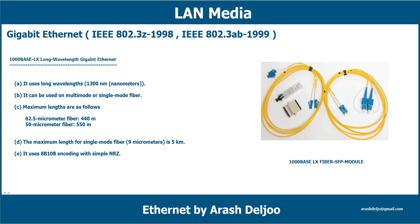The next standard is 1000Base-LX, which stands for long wavelength gigabit ethernet. The LX stands for long, indicating that this version is intended for use with long wavelength transmissions over long cable runs of fiber optic cabling. Gigabit ethernet standards are defined in the 802.3Z standard. 1000Base-LX is an extension of standard ethernet technologies to gigabit-level network speeds.